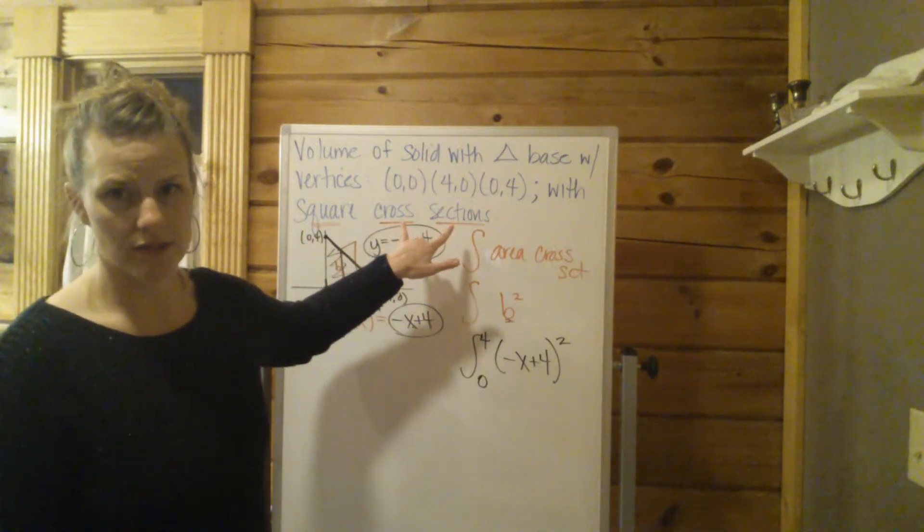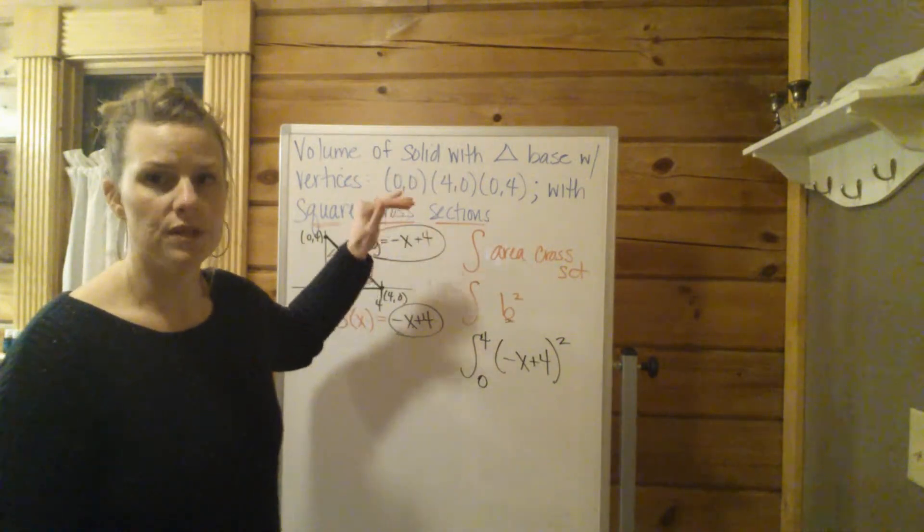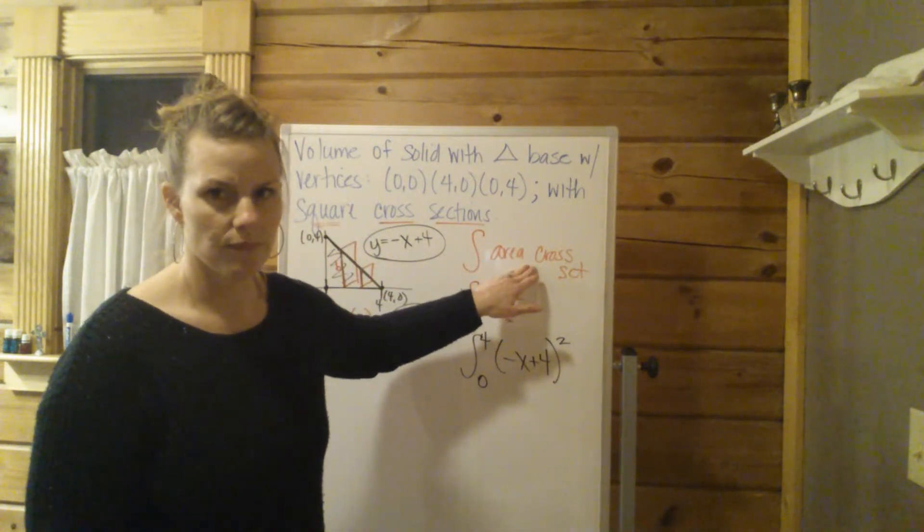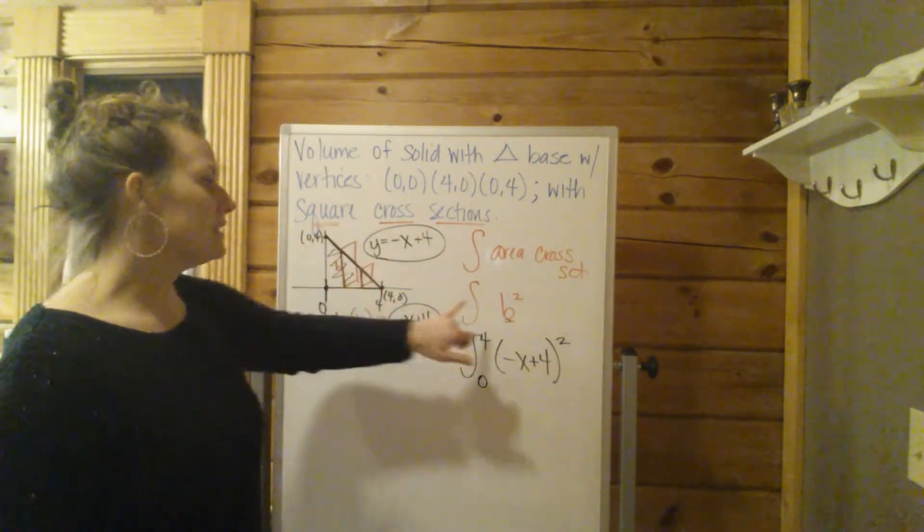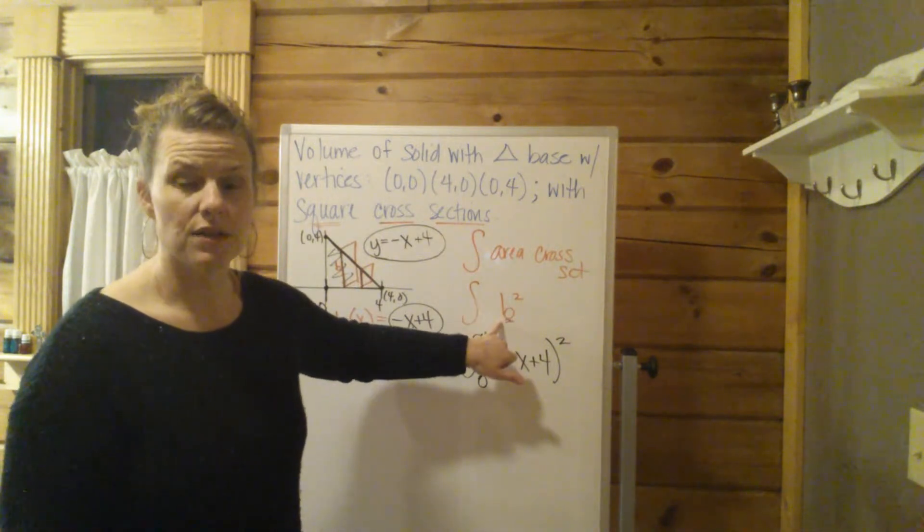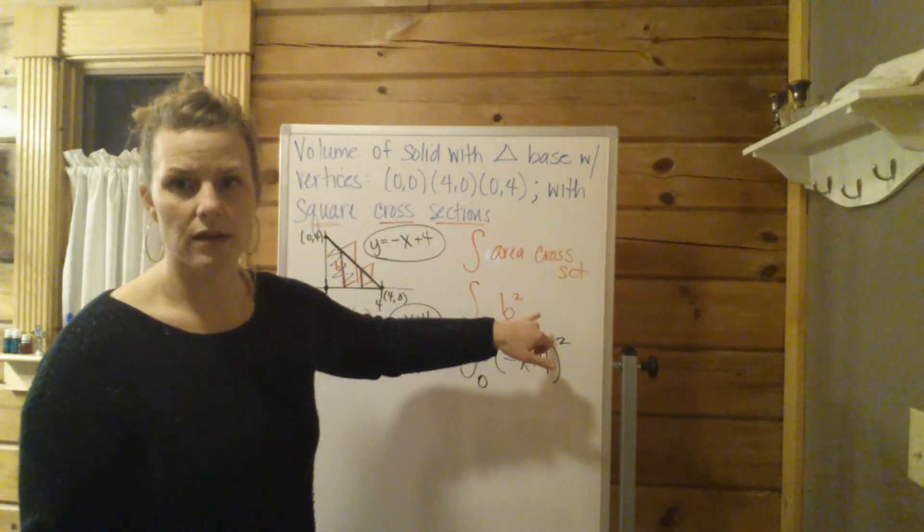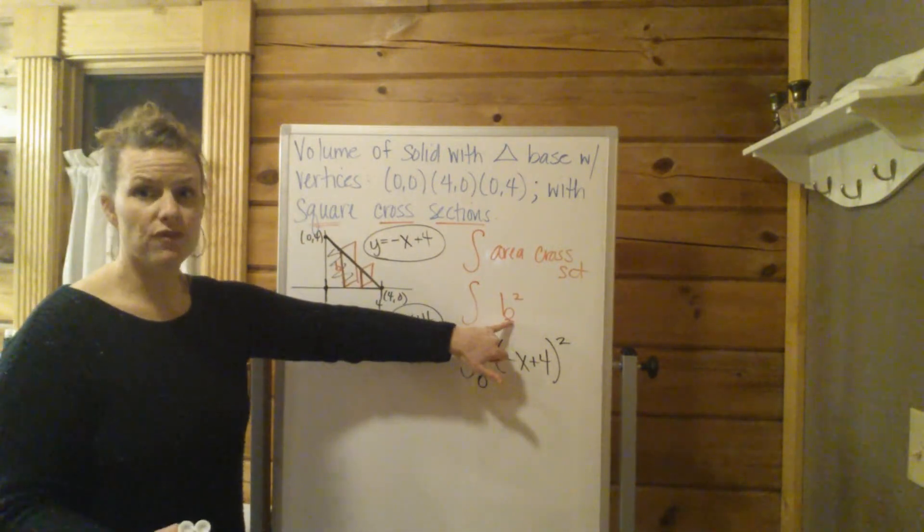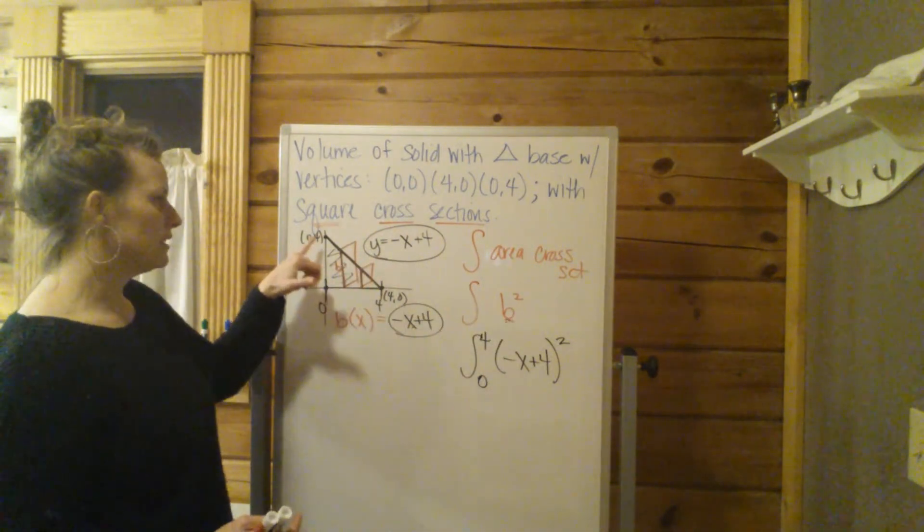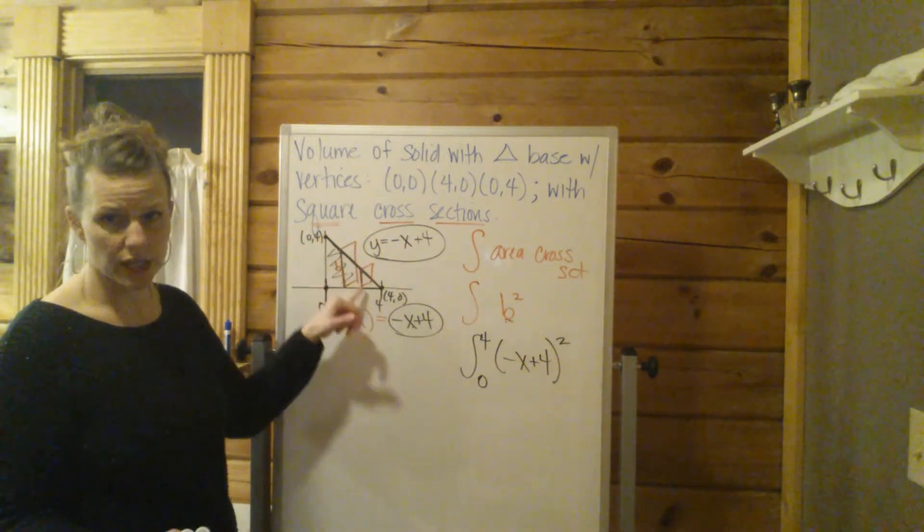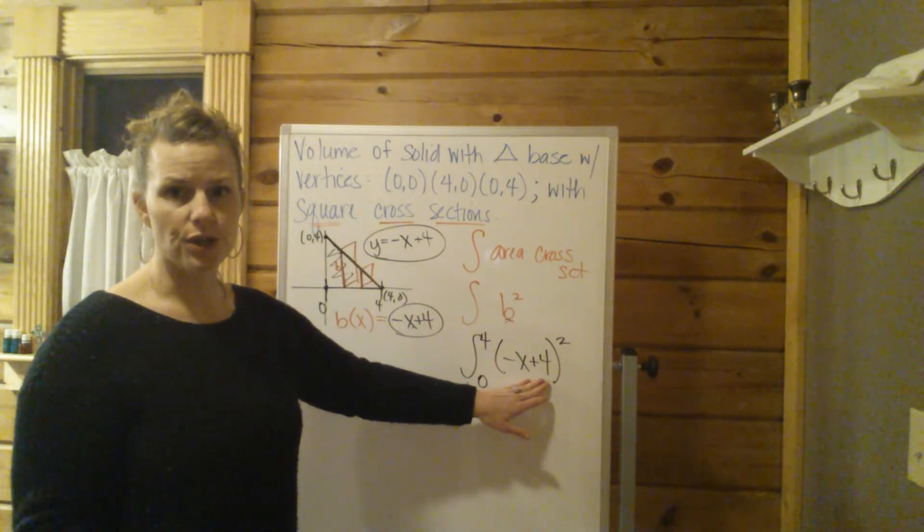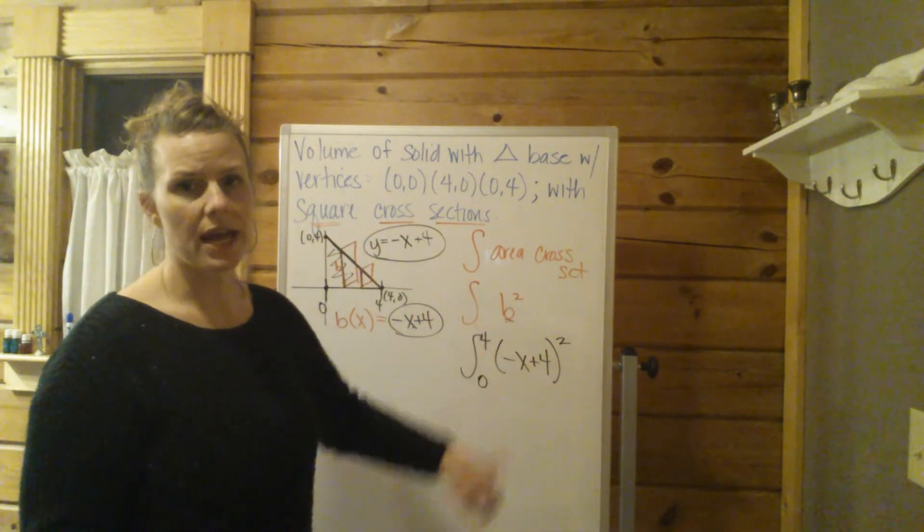keyword cross-section. If you're doing a volume using cross-sections, you have the integral of the area of the cross-section. The cross-section in this case is a square. So the area of a square is base squared. So from there on out, you represent this b from the formula in terms of x, in terms of this function over here. So we got b equals negative x plus 4. Plug that into your integral. Find your bounds from left to right, and you're good to go. Hopefully that helps. Thanks.